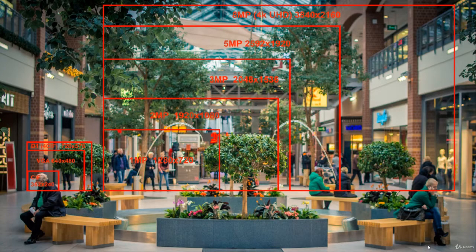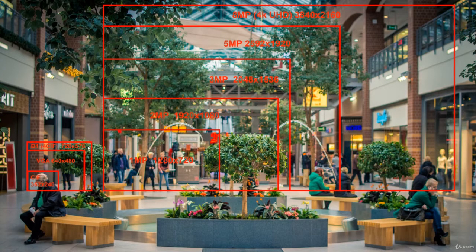On the very left you can see old analog cameras, and as you can see they are basically tiny. The highest resolution you could get in old analog cameras was so-called D1, which was equal to 4CIF — 720 by 576 pixels. But if you look at current available resolutions on the right, it's multiple times what that was.